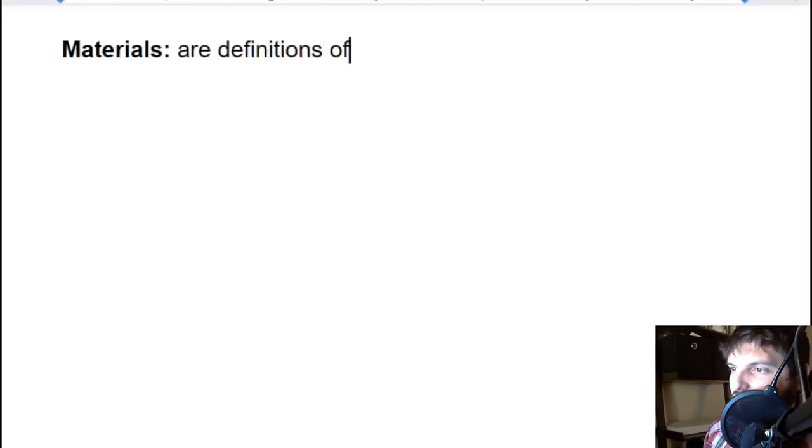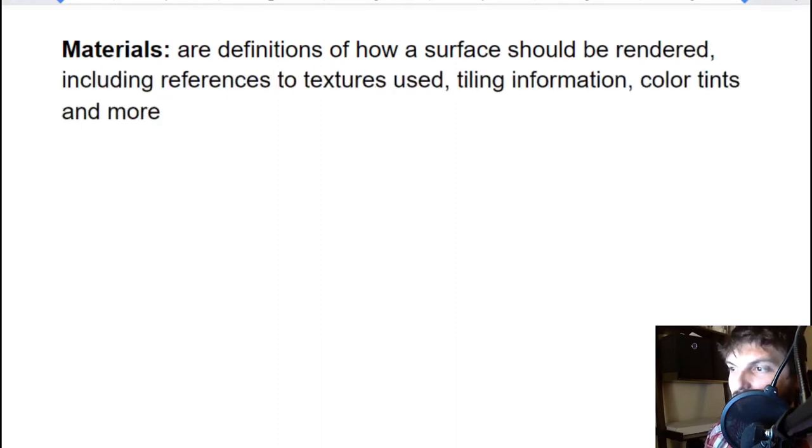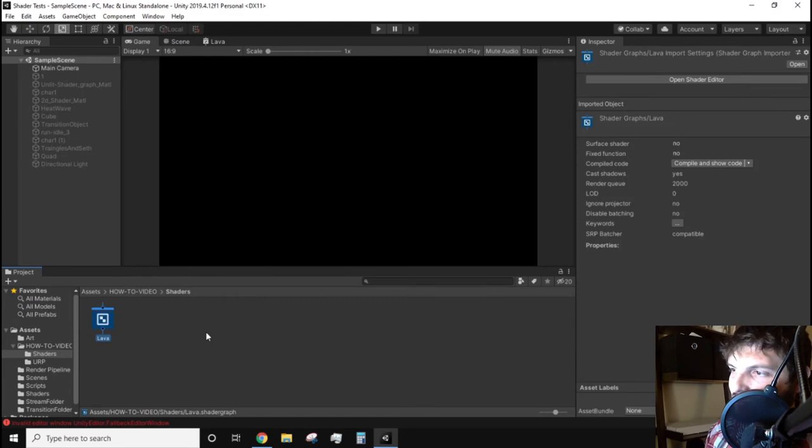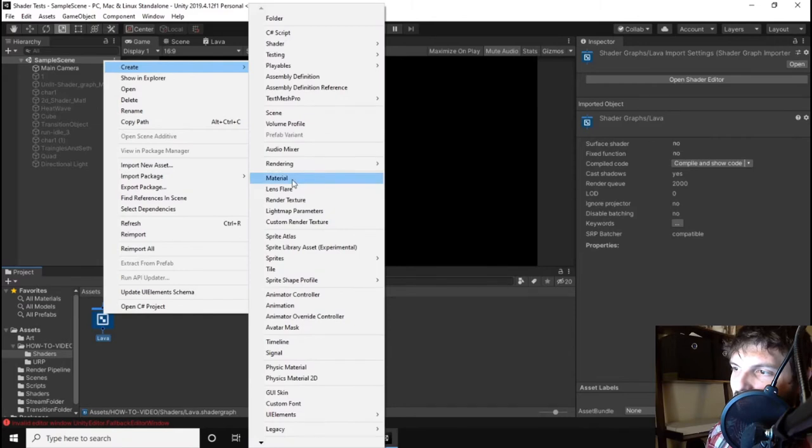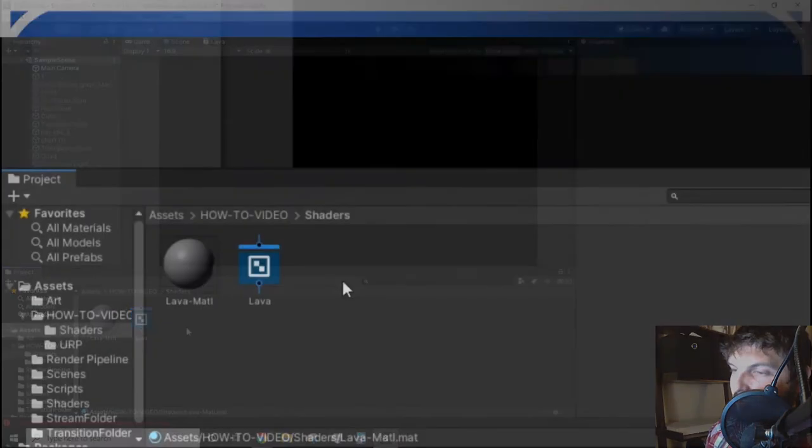We now need to associate the shader to a material. The reason we do this is a shader is the math which manipulates what a pixel should look like on screen based on the material and lighting configurations. The easiest way to create an associated material for a shader is by right mouse clicking on the newly created shader graph asset, create and then select material. I'm just going to name it lava material and double click our shader graph asset.